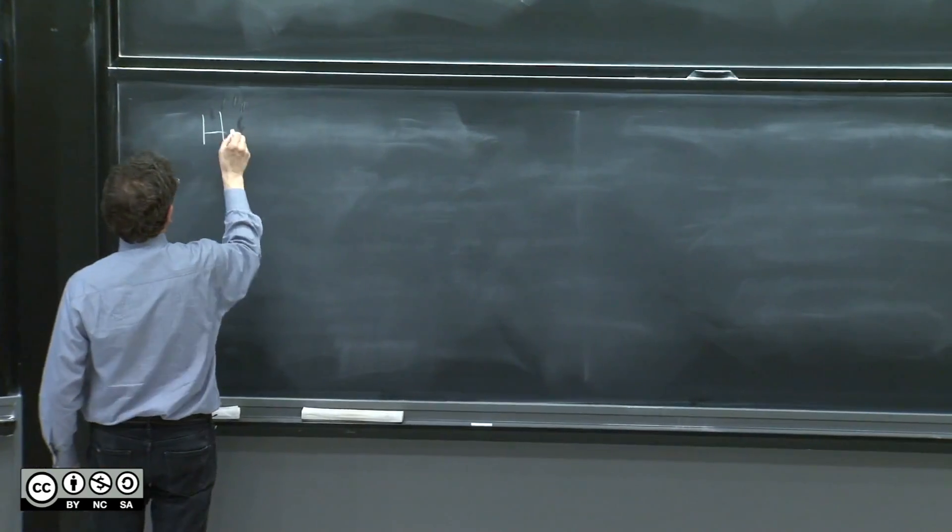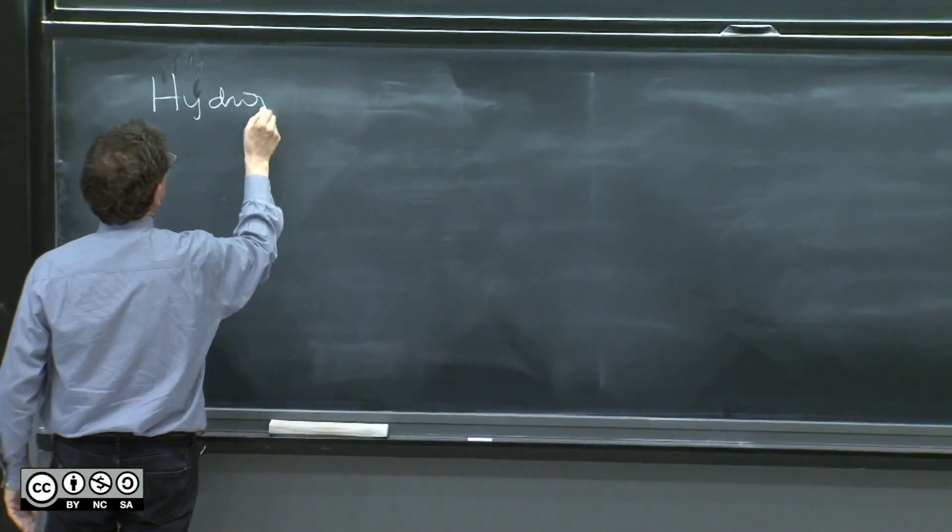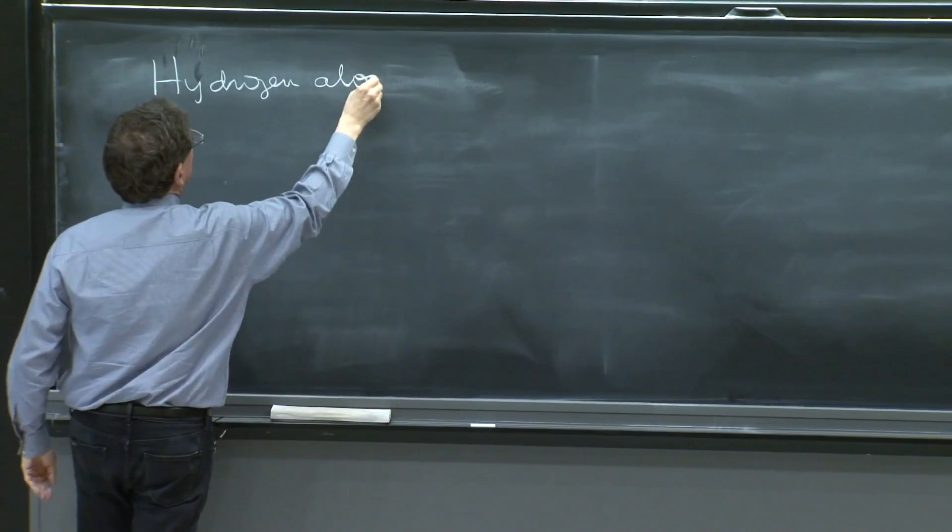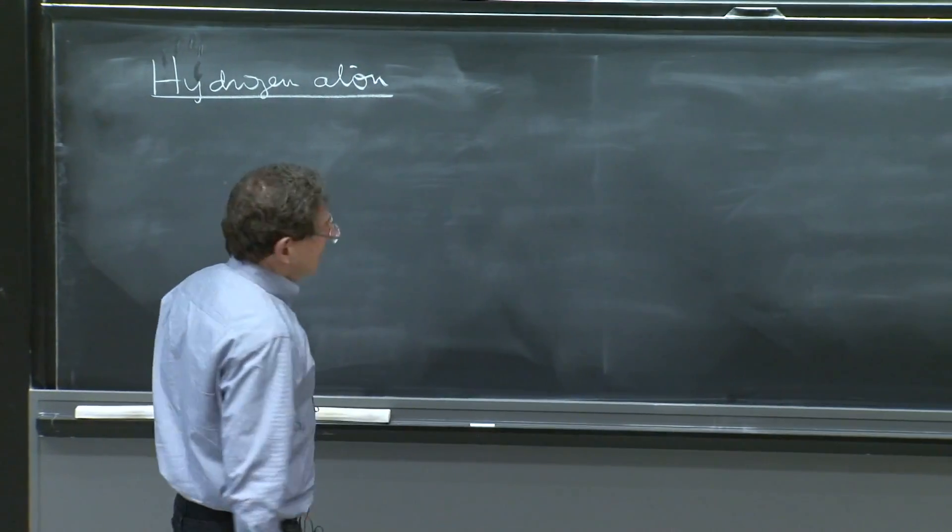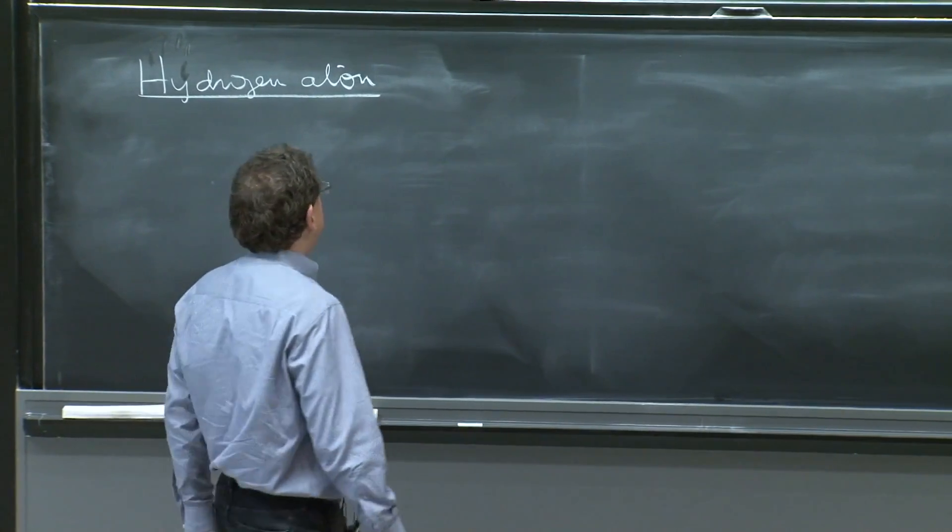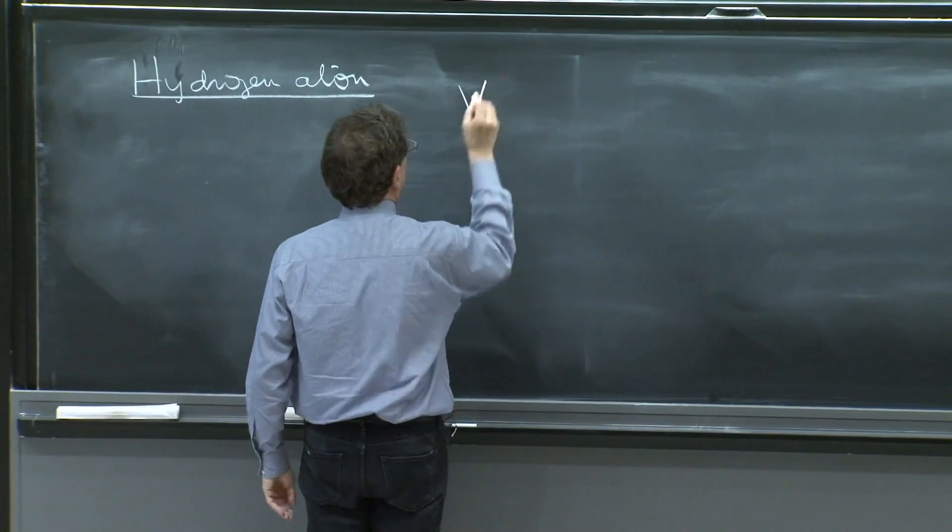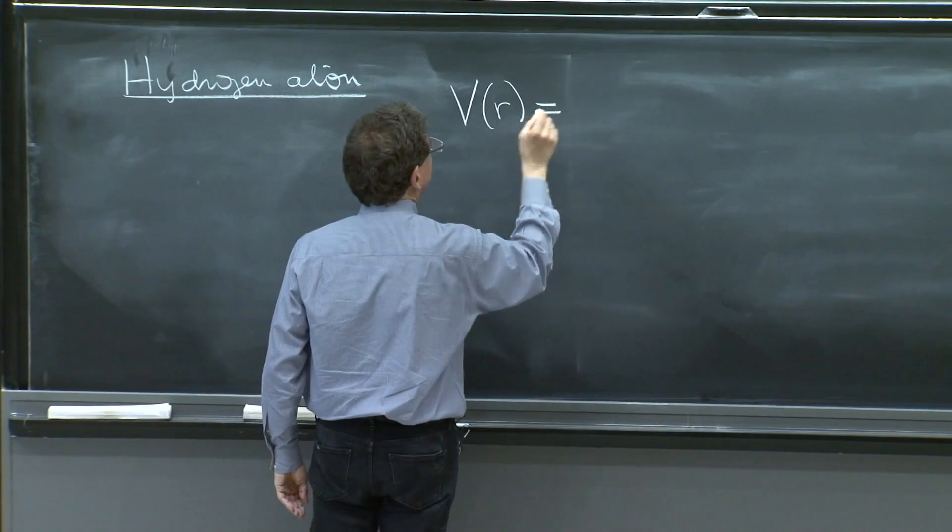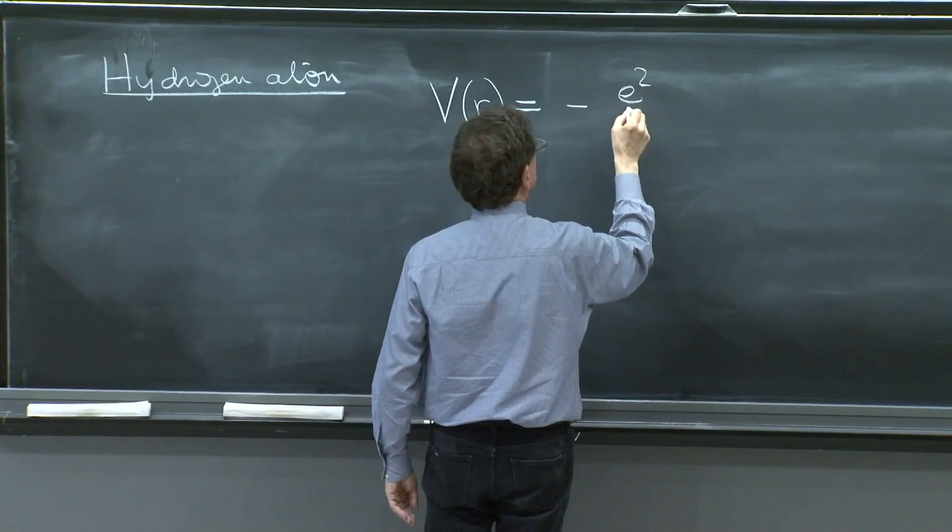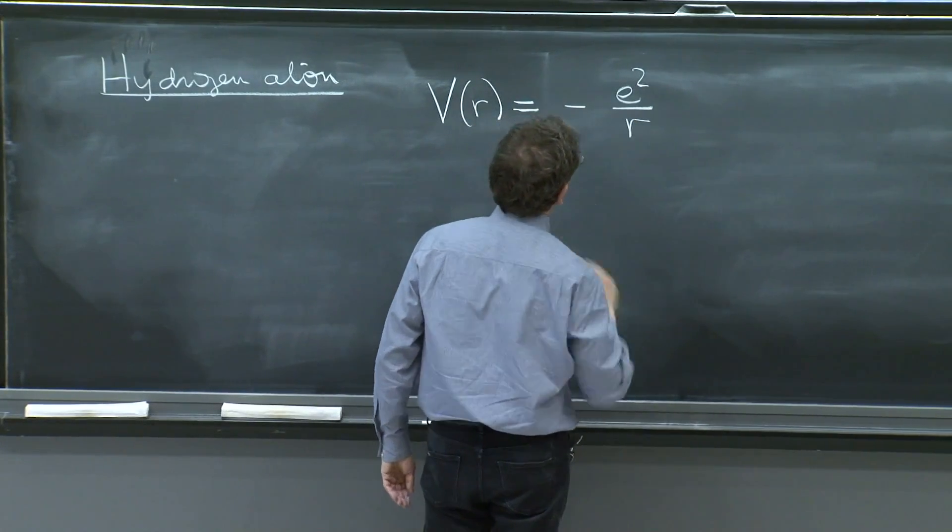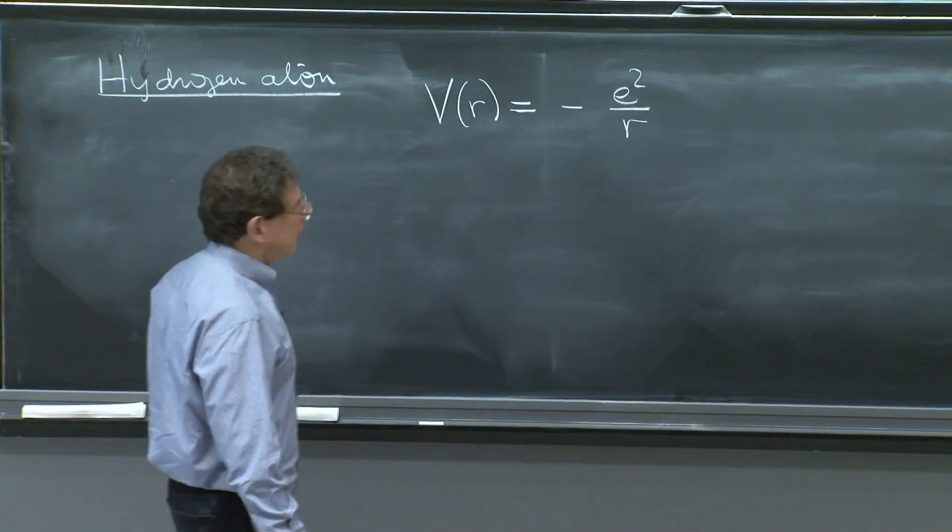Hydrogen atom, again, the first thing to do is to describe the potential, V of r. And it would be, in the units that we like to use, minus e squared over r.